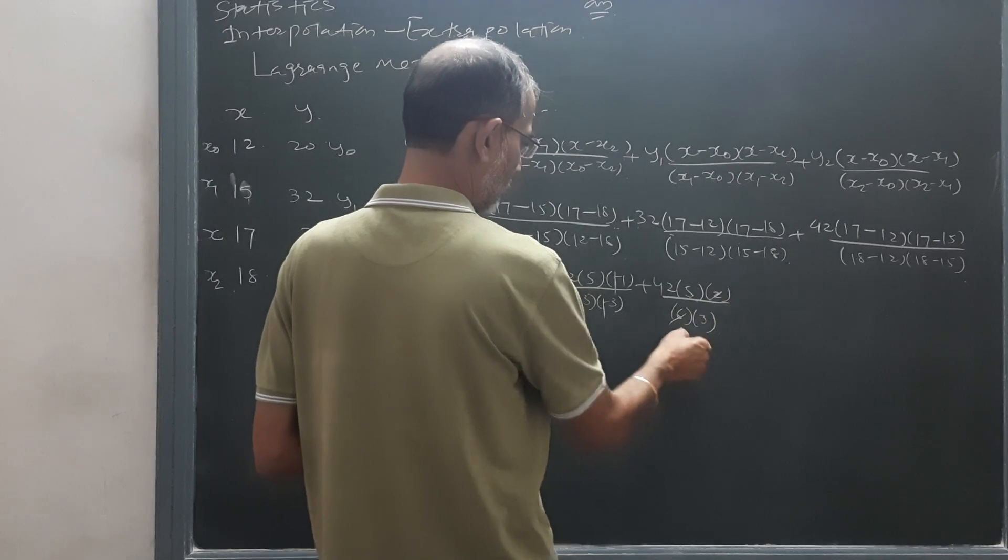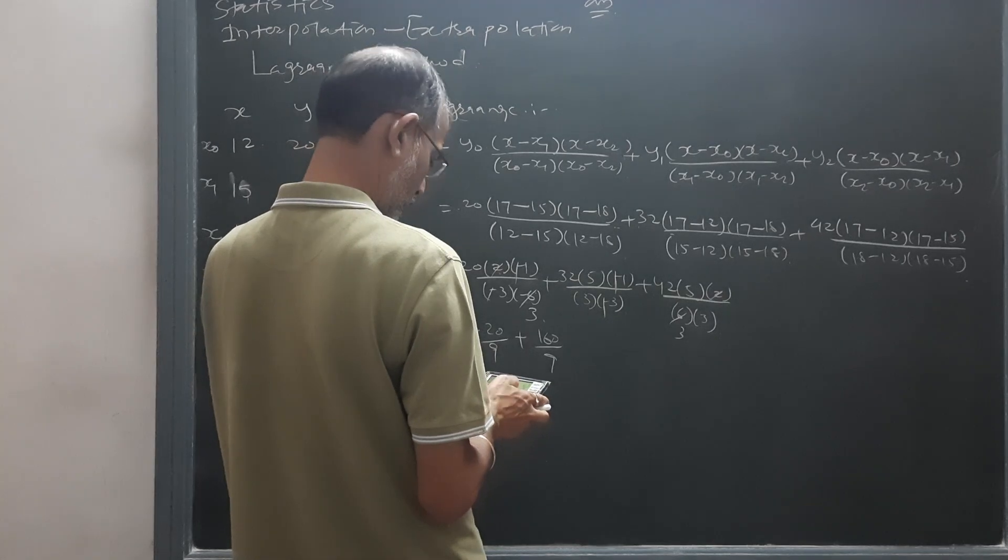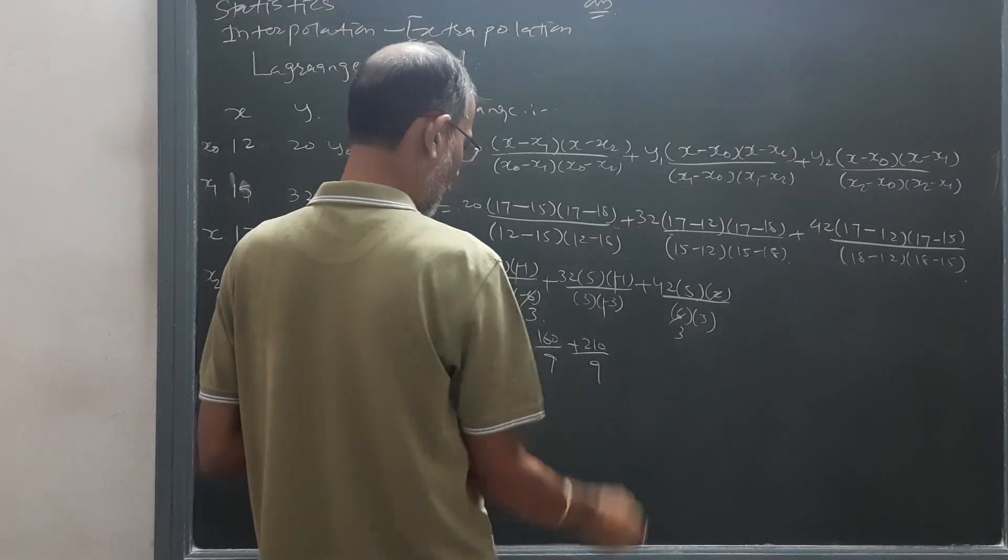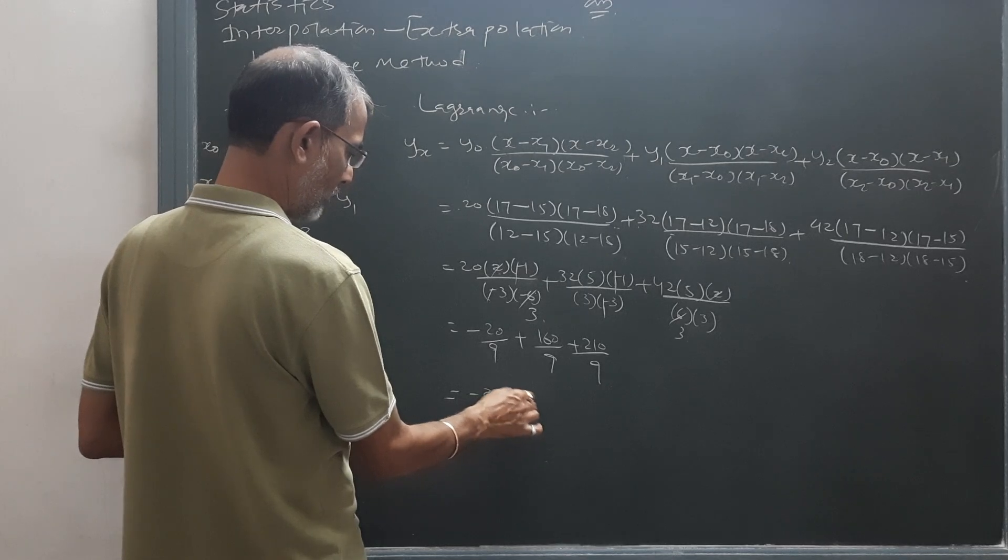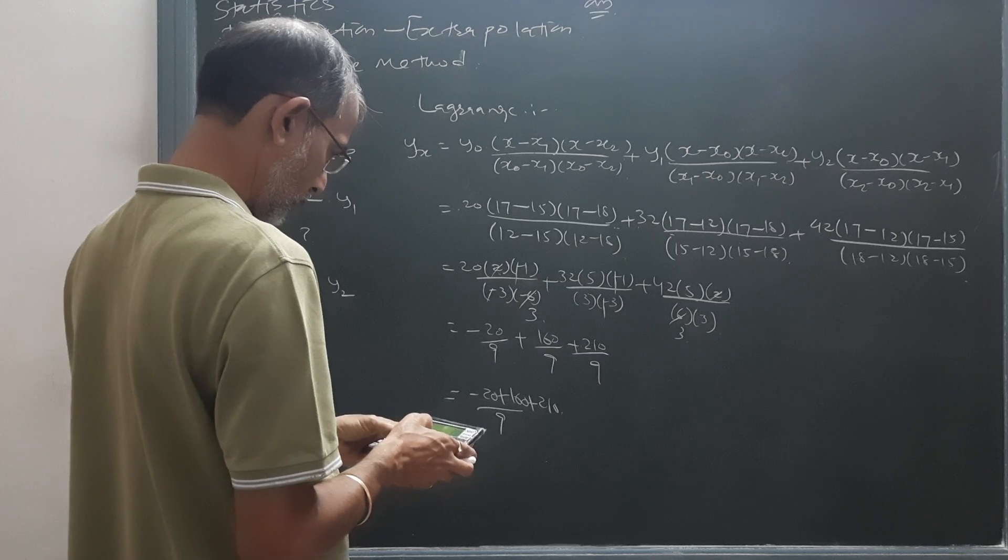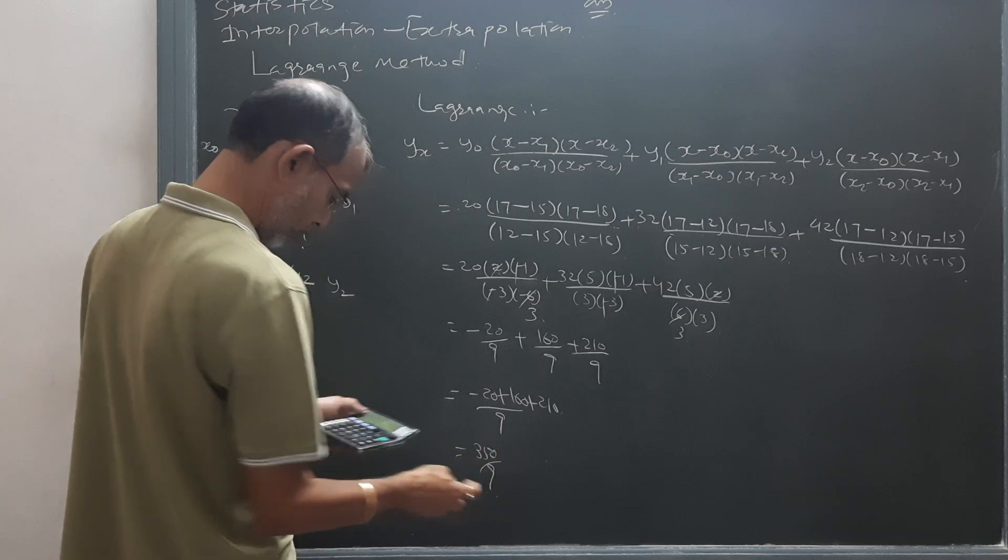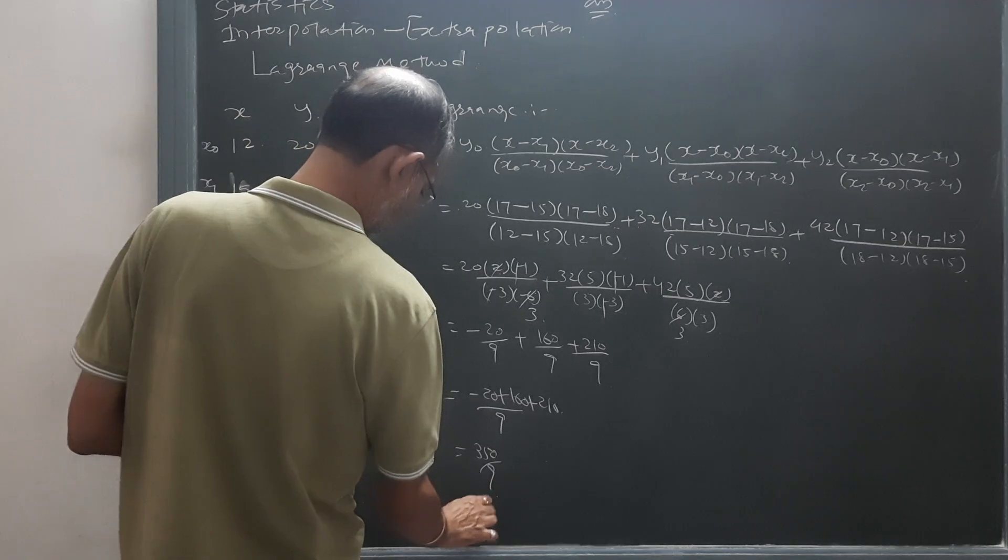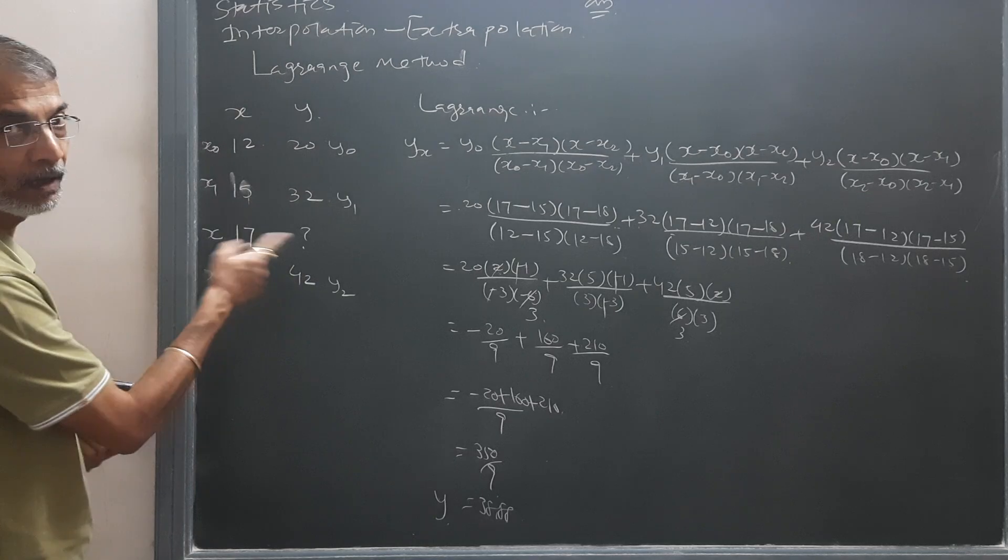2, 3, 6. So 2, 10 divided by 9. So LCM will be 9: minus 20 plus 160 plus 210. 350 divided by 9, 38.88 will be Y17.